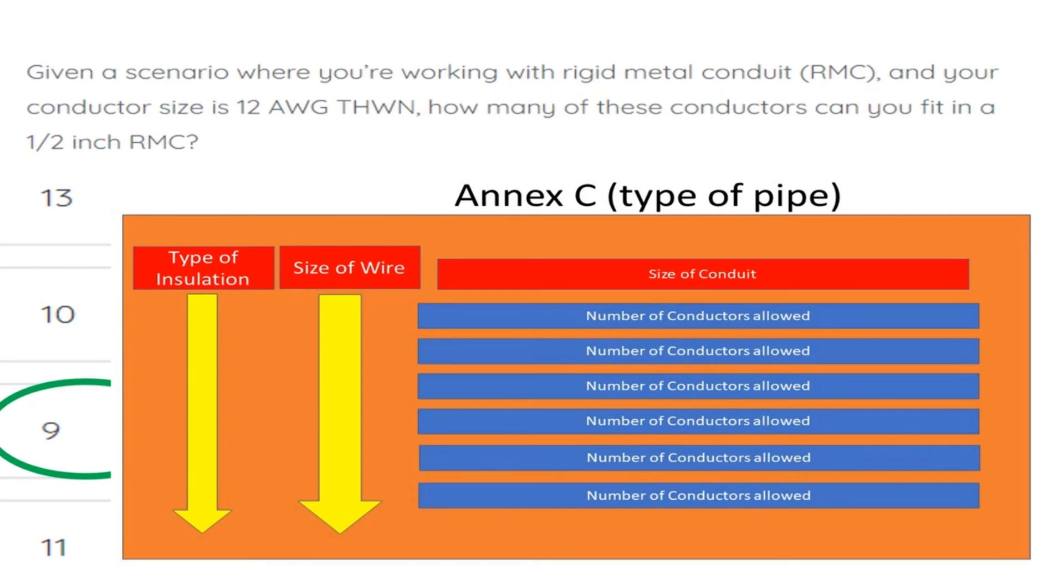Once verified, start on the left-hand side and find your type of insulation. Then move to the next column to find your wire size. Come across the top to find your size of conduit, then slide down to intersect with the number of conductors allowed.